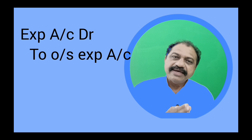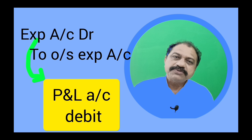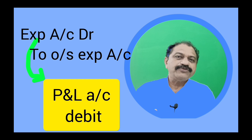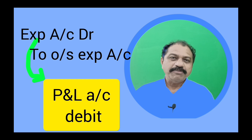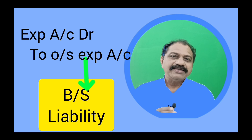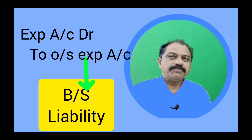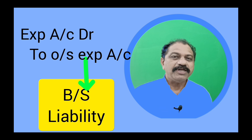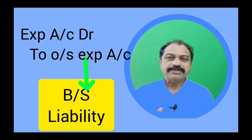The expenses will go to the profit and loss account debit side, and at the same time outstanding expenses will appear as a liability in the balance sheet.